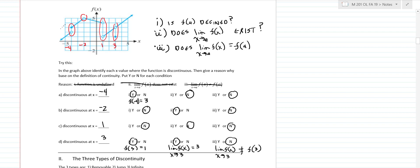At negative 4: the function is defined — f of negative 4 is 3 — so condition 1 is yes. The limit does not exist — the left and right-hand limits don't come together — so condition 2 is no. And if the limit doesn't exist, then condition 3 has to be no, because the function value can't be the same as a limit that doesn't exist. At negative 2: is it defined? No — there's a bubble, so you're undefined there. Does the limit exist? Yes — the value of that limit is 5, and both left and right-hand limits go to 5. Does the value of the limit equal the function value? No, because there's no function value.